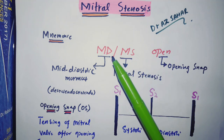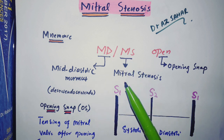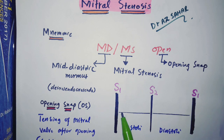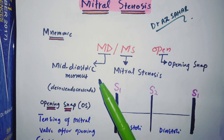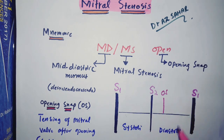Okay, so admission in MD MS is open. MD MS is a mnemonic: MD is for mid-diastolic murmur, MS is for mitral stenosis, and OPEN is for opening snap. As you can see here, this is S1, S2, then S1 again. Between S1 and S2 is systolic, and between S2 and S1 is diastolic. This murmur is a mid-diastolic murmur, and it is going to be followed by an opening snap.